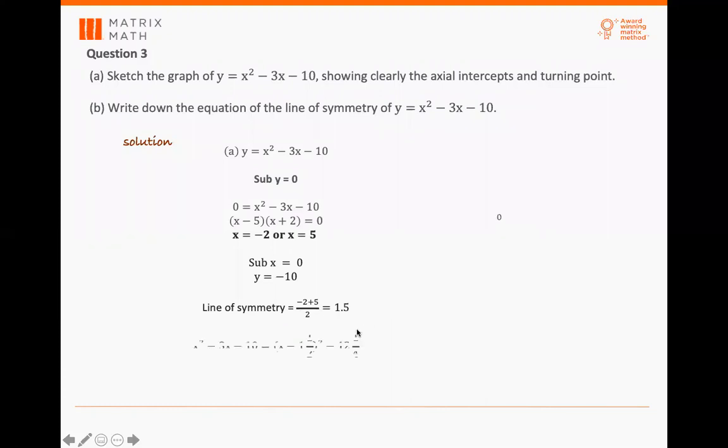After that, you can actually use completing the square to find what is the maximum or minimal point. By looking at this equation, the coefficient of x squared is actually positive. So once you see that it's positive, you know that it's a smiling face, so you know that the curve will go upwards.